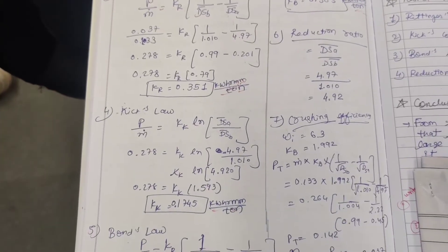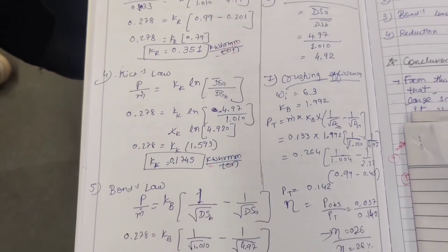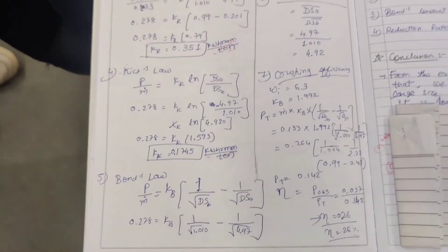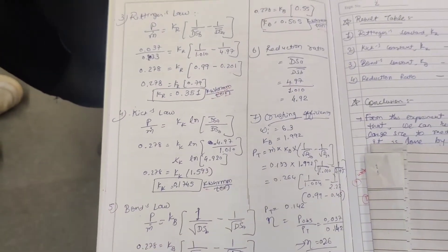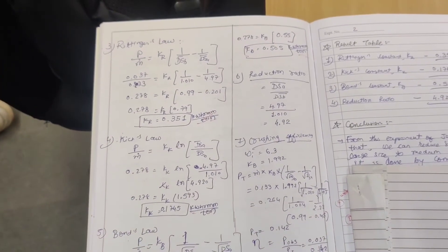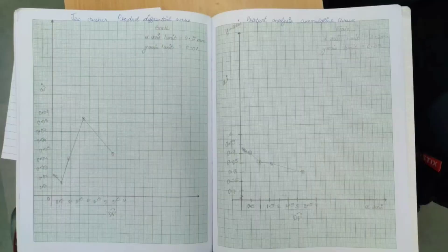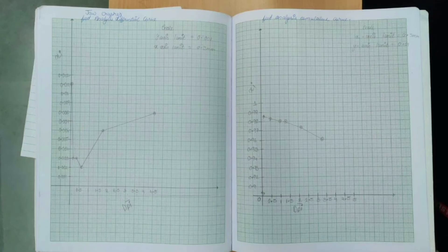Apply these values in the formulas for Rittinger's law, Kick's law, and Bond's law to calculate Kick's constant, Bond's constant, and Rittinger's constant. Plot the graph for product analysis.